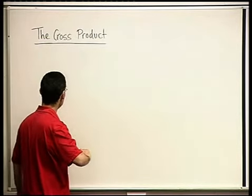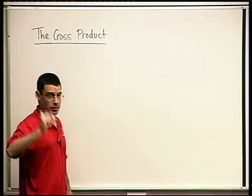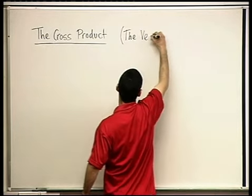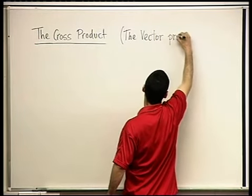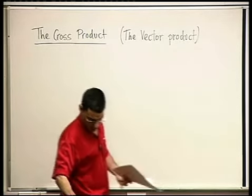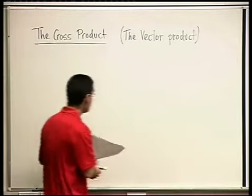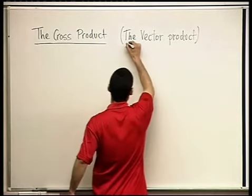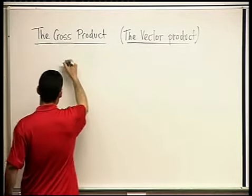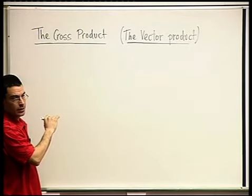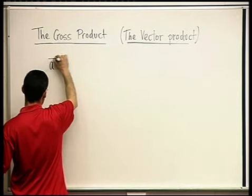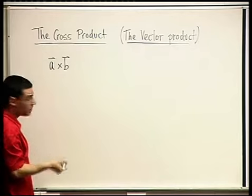The cross product is another kind of vector multiplication, also called the vector product. It's a product of vectors which gives a vector. The way we denote it is with a cross: A cross B. And the result is a vector.